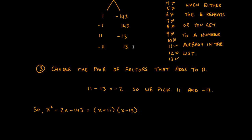The nice thing with the AC method when the coefficient of x² is 1 is that we can jump directly to the answer from the factor tree without any extra steps. The answer is (x + 11)(x - 13). The 11 and -13 came from our factor tree — those were the two numbers that added to give us -2. That's the entire problem.